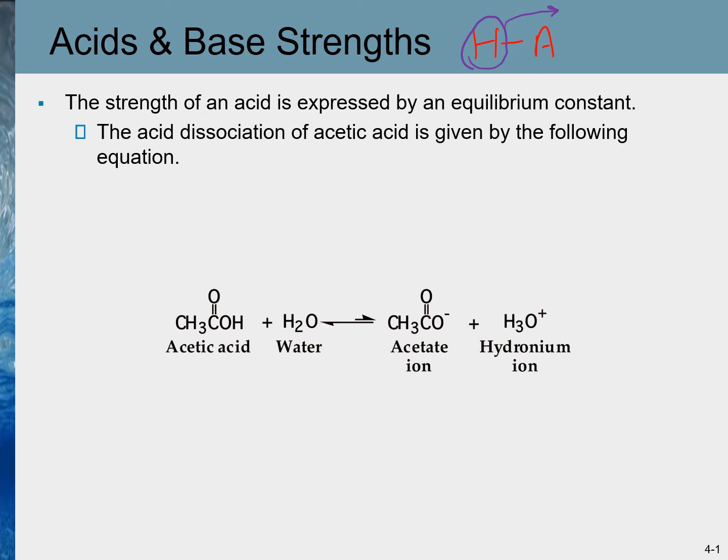The acidity of any compound is measured by an equilibrium constant. For example, the acid dissociation of acetic acid is given in this equation, and as we can see it's a reversible reaction, so there will be some kind of equilibrium.